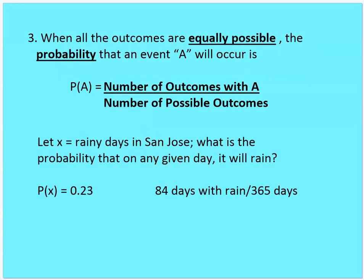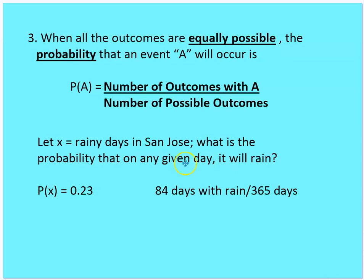Rule number three: when all the outcomes are equally possible, the probability that event A will occur is the number of outcomes with A over the number of possible outcomes. For example, let X equal the rainy days in San Jose. There were 84 days with rain out of 365 days in the year. So the probability that it will rain on any given day is 84 over 365, or 0.23.